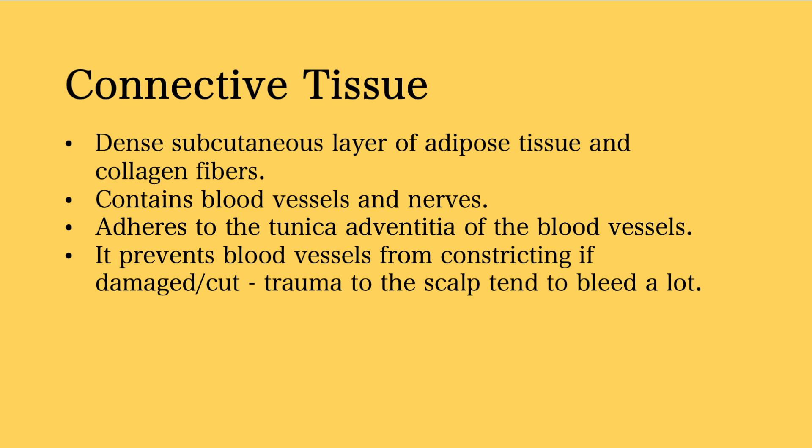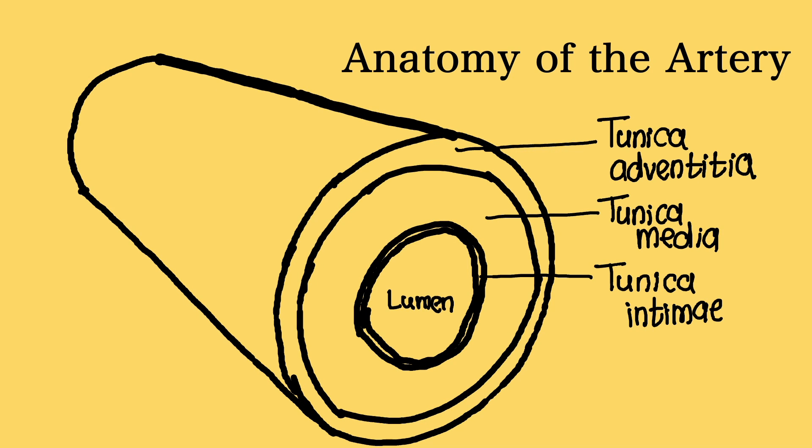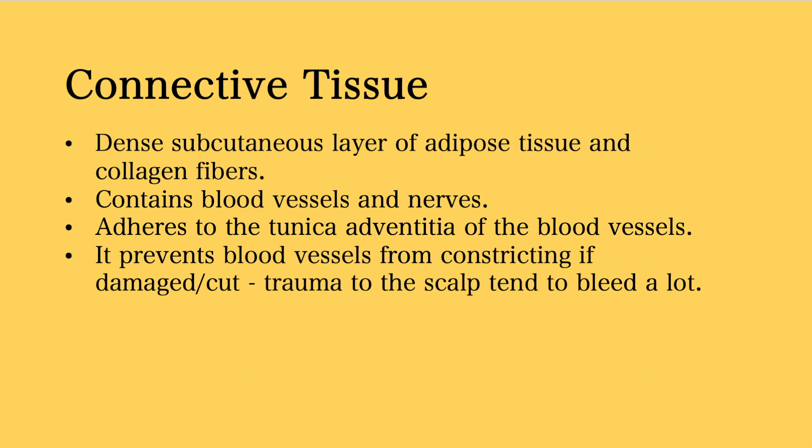The second layer is the connective tissue. This layer is a dense subcutaneous layer of adipose tissue with a dense network of collagen fibers. It houses the blood vessels and nerves that supply the scalp. This dense connective tissue adheres to the tunica adventitia — the outermost layer of the blood vessel wall — which prevents these vessels from constricting when damaged or cut. This is why trauma to the scalp tends to bleed a lot, in contrast to other areas of the body where a laceration would cause blood vessels to constrict to prevent blood loss.